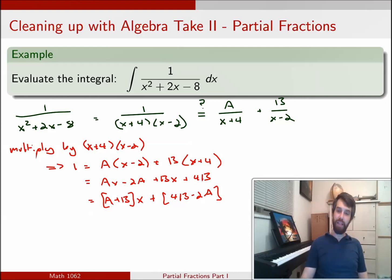Now what I want to note at this stage is that this equation that I have, 1 equals A plus B times x plus 4B minus 2A, is sort of two equations, because I can vary my number x as much as I wish. In fact, since x can be anything, but on the left hand side it has to be fixed,